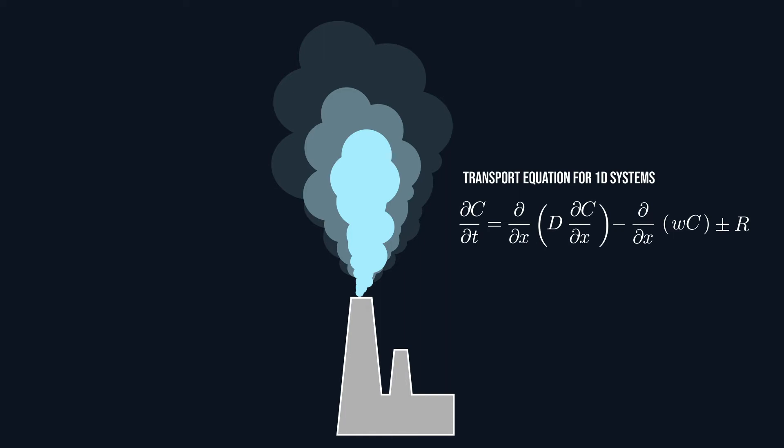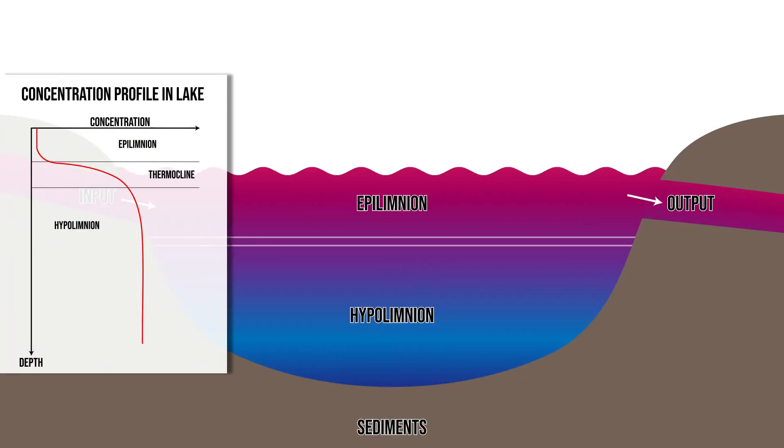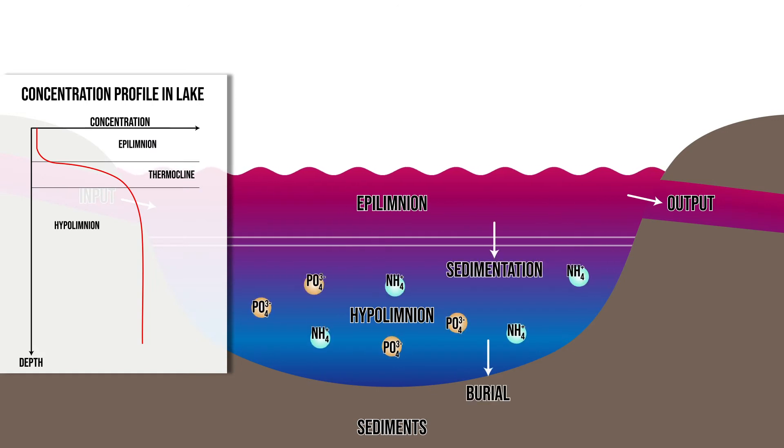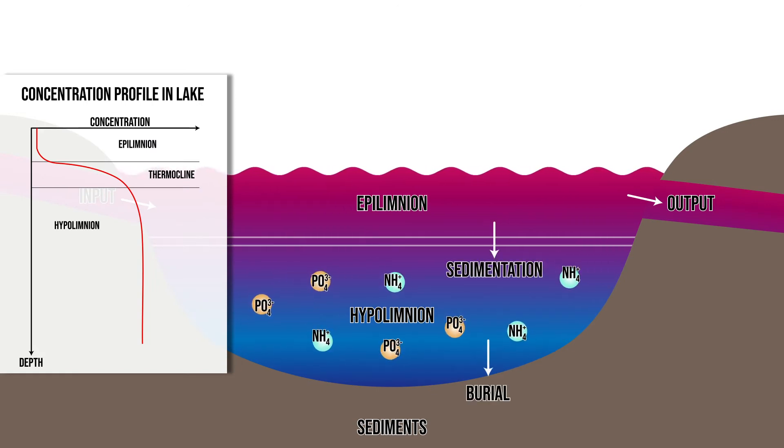The transport equation for 1D systems shows how the net change in concentration in each cell is equal to the rate of change of the turbulent diffusion and advection fluxes with distance plus or minus reactions that happen in the cell. In the case of a stratified lake, advection causes the particles in the lake to settle in the sediment due to the settling velocity of the particles. Moreover, the turbulent diffusion process causes the dissolved mineralized materials such as nitrogen and phosphorus in the deeper water layers of the lake to move upward.